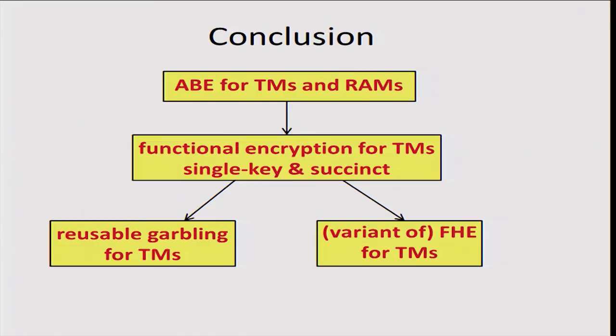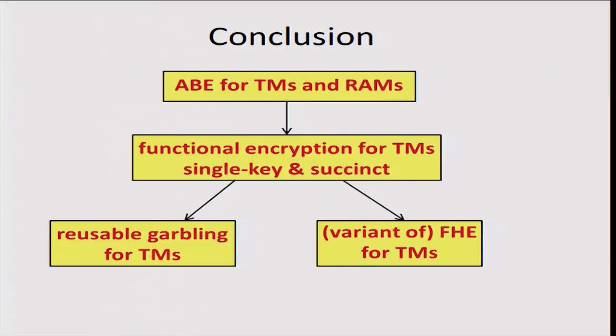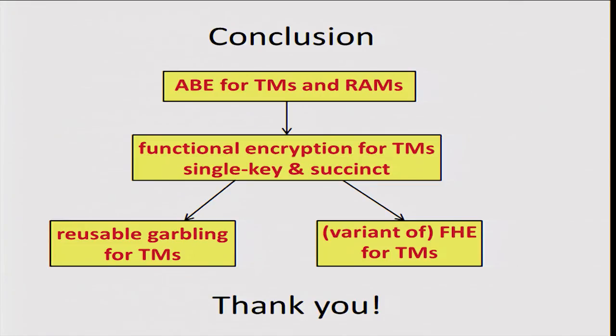In conclusion, I showed you how to construct ABE for Turing machines and mentioned our result for ABE for RAMs. I also mentioned our results for functional encryption for Turing machines (single key and succinct), reusable garbling for Turing machines, and a variant of FHE for Turing machines. You can learn more in the paper. Thank you.